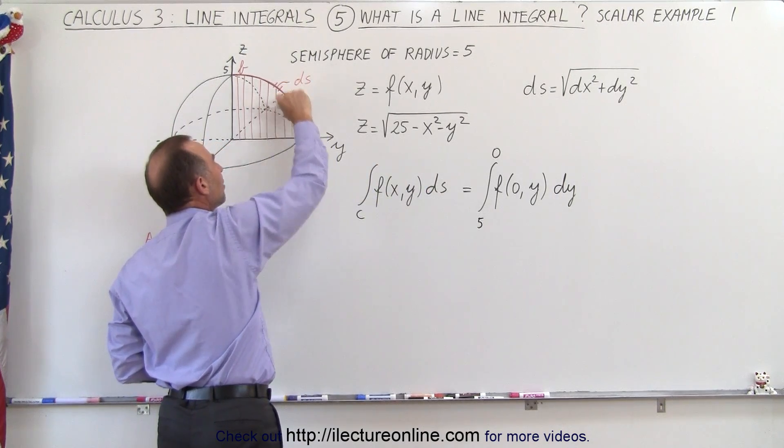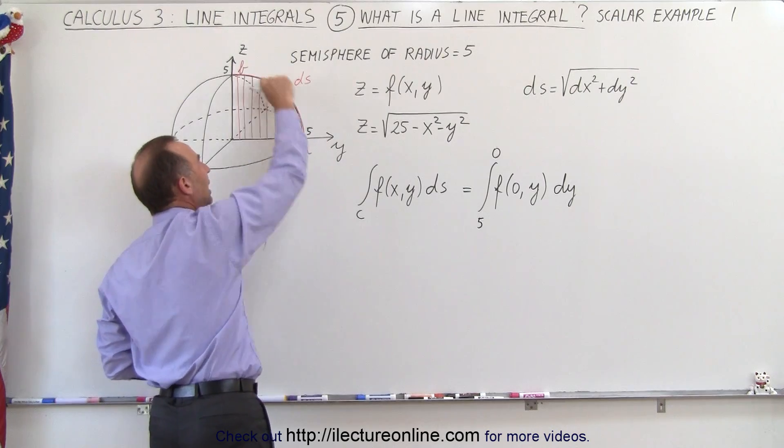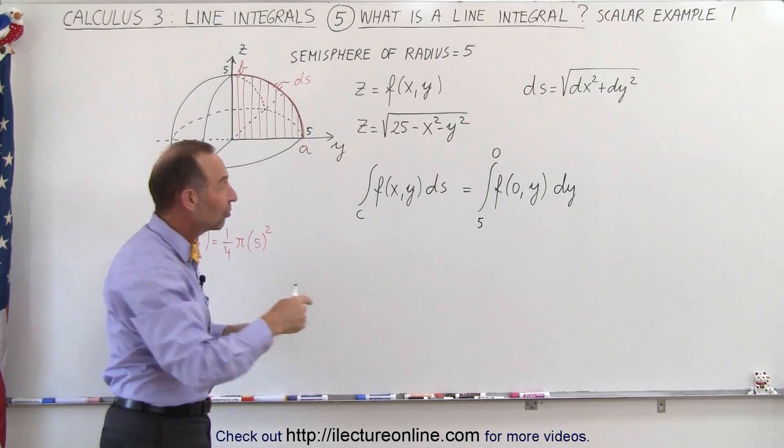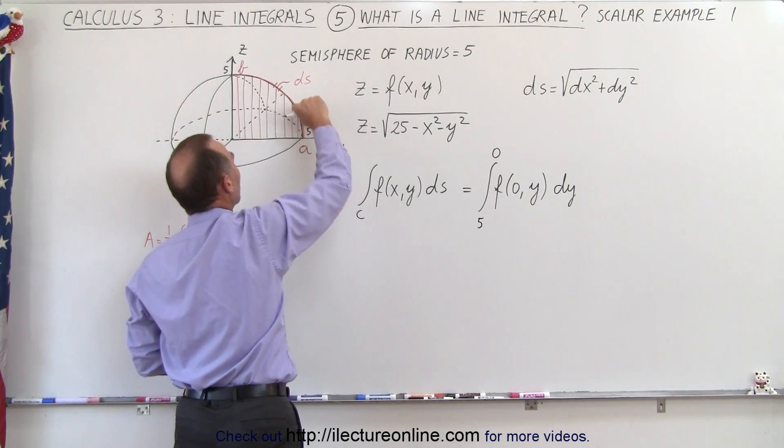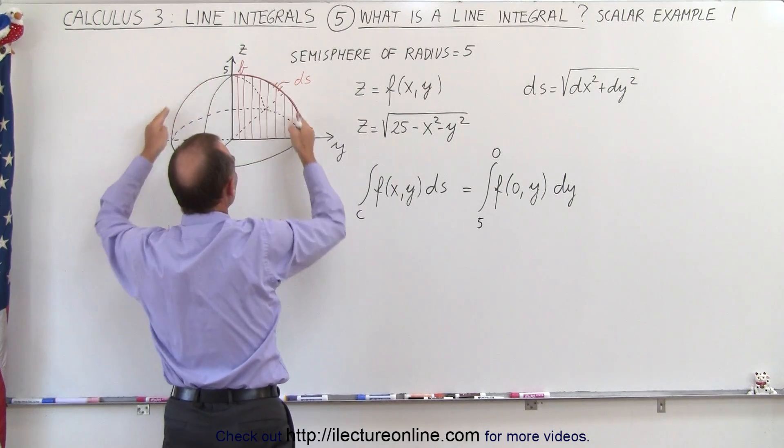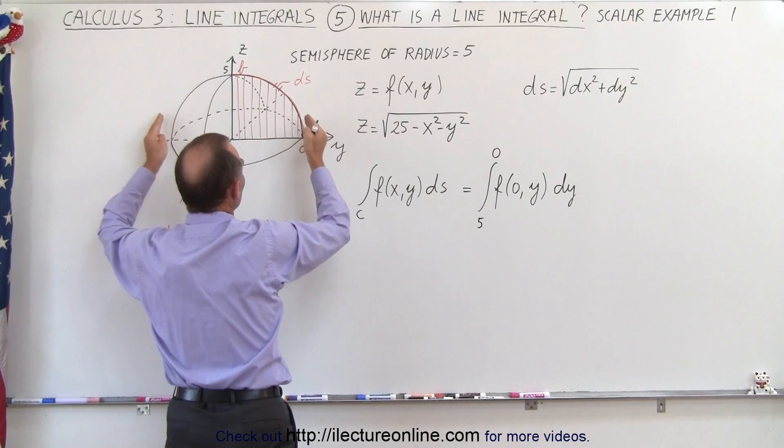which is a small little piece of my path from a to b. So when I sum up all the interactions, all the multiplications, those small little segments along the path, multiply times the value of that function, that semi-sphere,